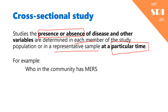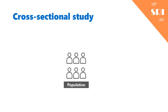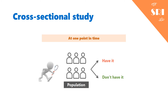For example, if you want to study who in the community has Middle East Respiratory Syndrome, we pick a population and ask each person — or test them — whether they have the disease or not. We want to know right now who has this particular condition and who doesn't. An important point is that all of this happens at one point in time. We're not following these people or looking at their past; we just care what is wrong with them now, today.